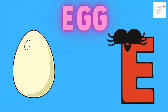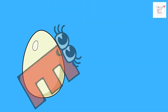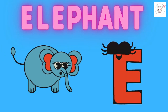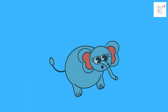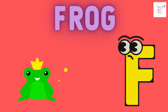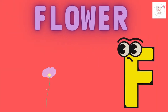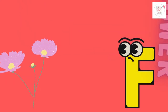E is for egg, e-e-egg. E is for elephant, e-e-elephant. F is for frog, f-f-frog. F is for flower, f-f-flower.